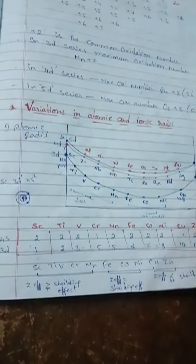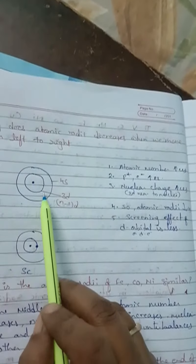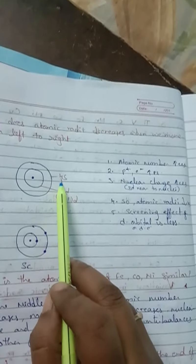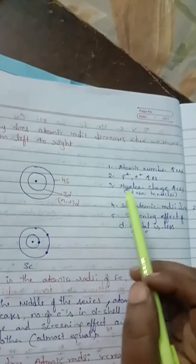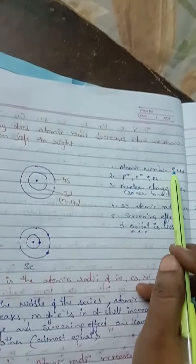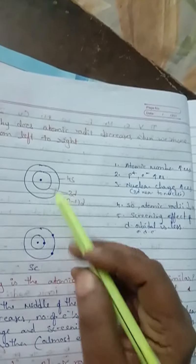Now question-wise: why does atomic radii decrease when we move from left to right? In the 3D subshell and 4S subshell — when we move in a period, the atomic number increases. When atomic number increases, the positive charge increases, the number of protons increases, and the number of electrons also increases.